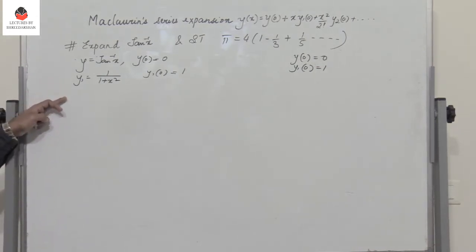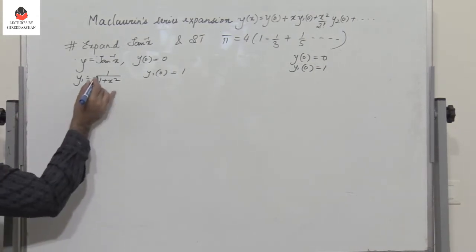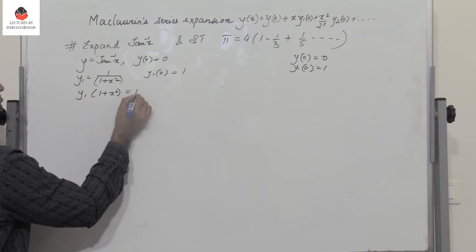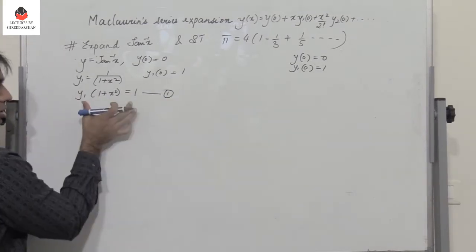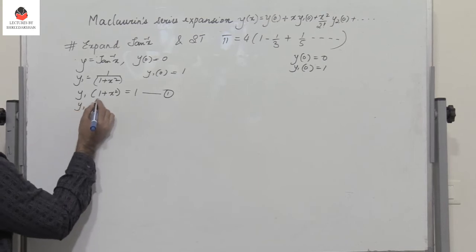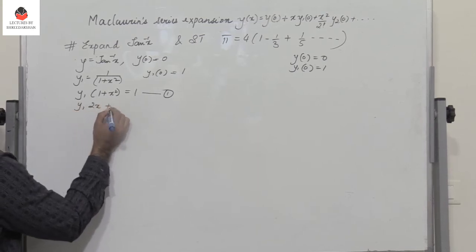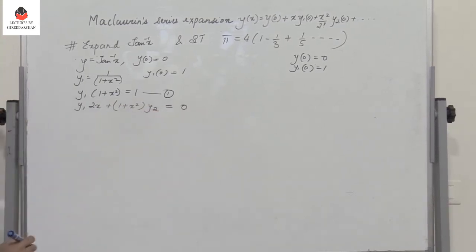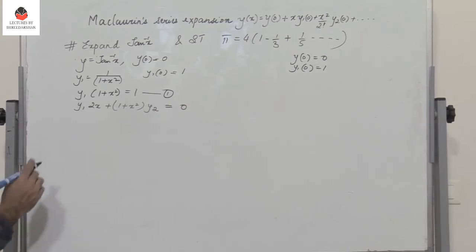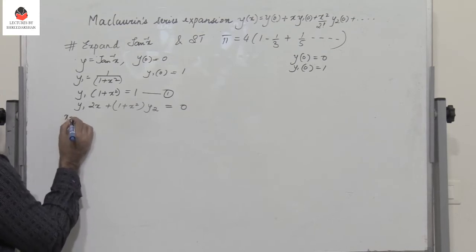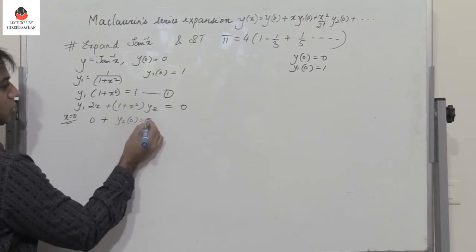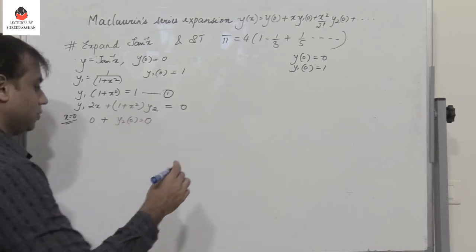We differentiate further. Taking (1 + x²) to the LHS: y₁·(1 + x²) = 1. Differentiating this equation: y₁·2x + (1 + x²)·y₂ = 0. Put x = 0: 0 + 1·y₂(0) = 0, so y₂(0) = 0.